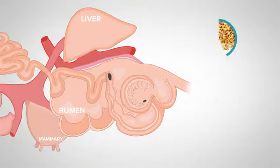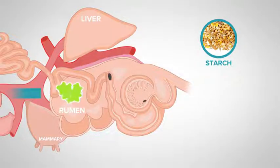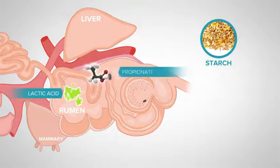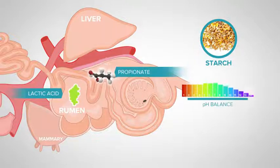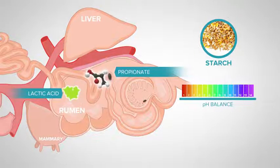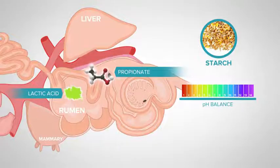If high levels of starch are eaten, lactic acid can also be produced. Propionate and lactic acid reduce the pH, or the acidity, of the rumen, which, as mentioned before, is detrimental to the microbes that digest structural carbohydrates.